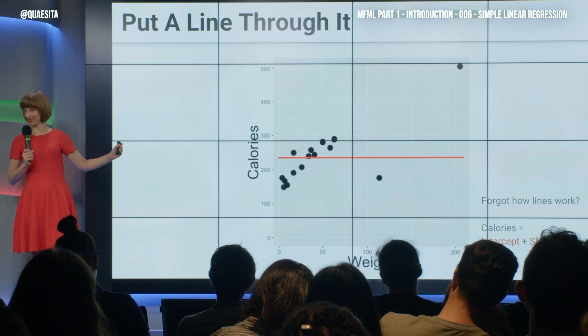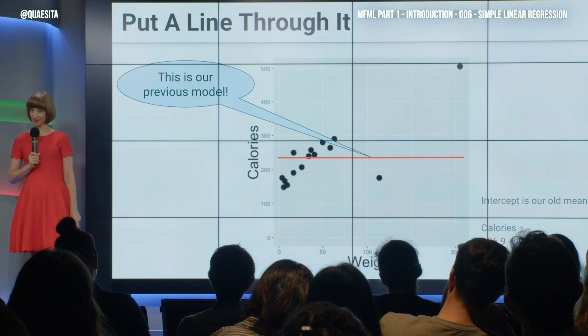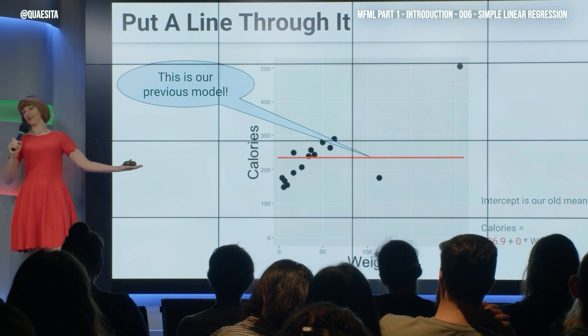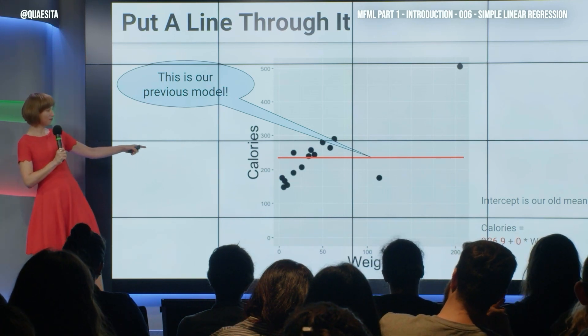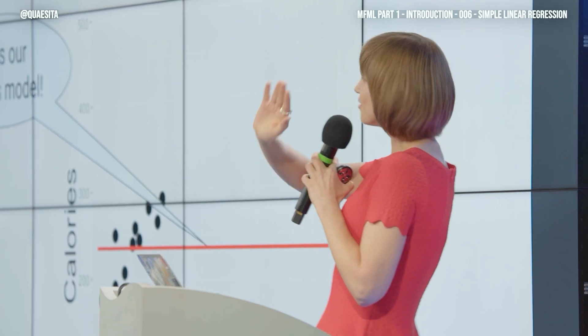Because, let me remind you of something real quick. This right here, this is your previous model. And now you're offended. But before, you were very happy to just guess 237 every time. I think 237 and zero times the weight means I ignore the weight and say 237 every time. And you were so fine to use it then. Check your feature engineering privilege.